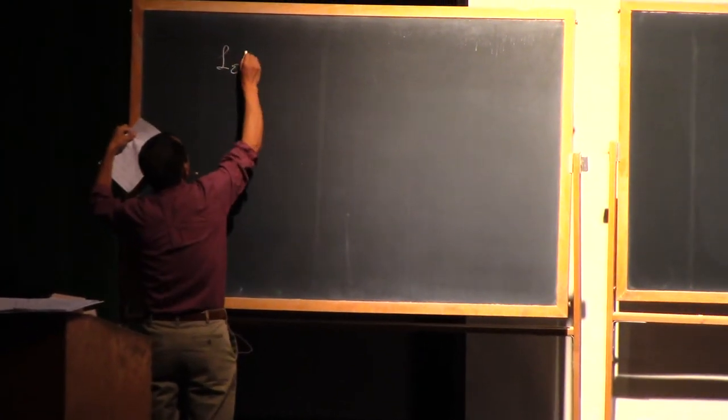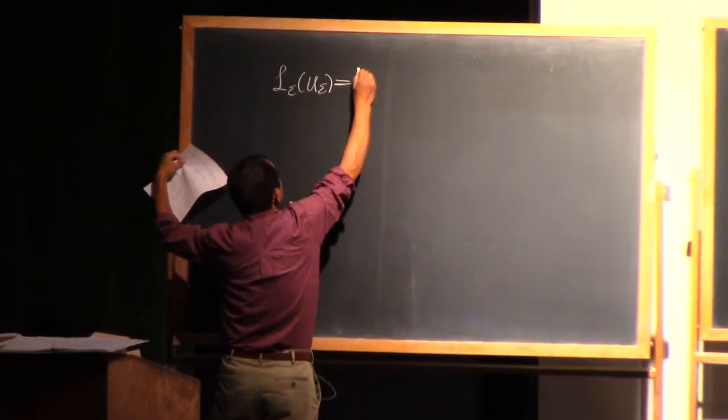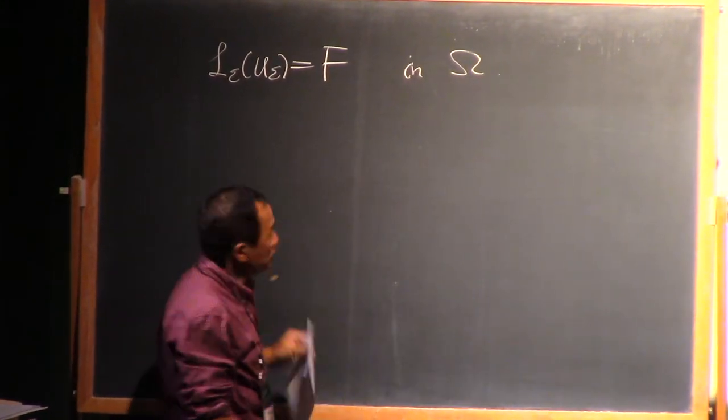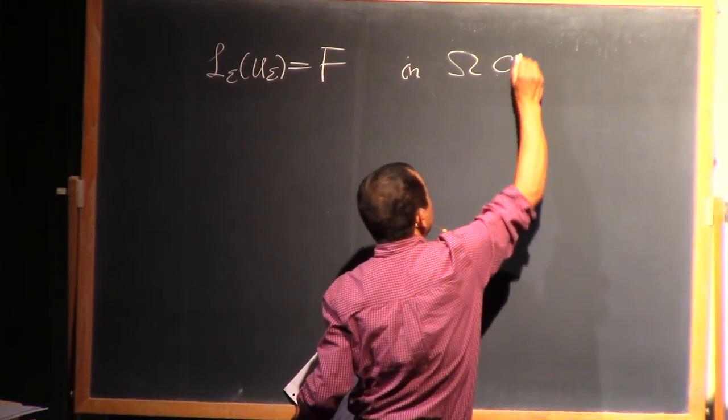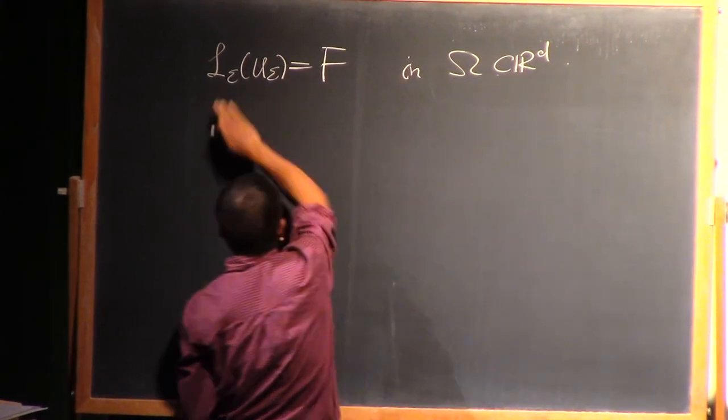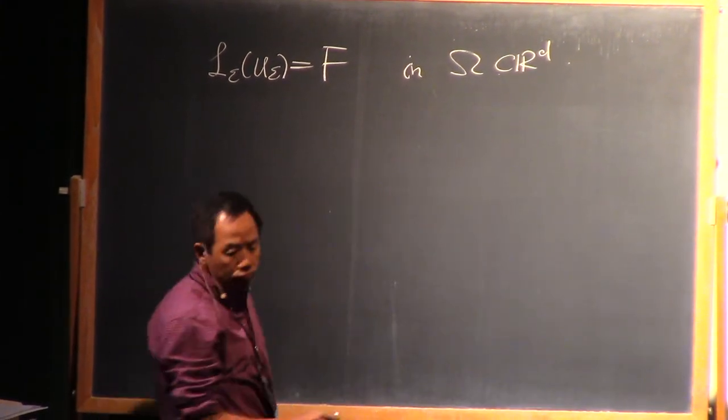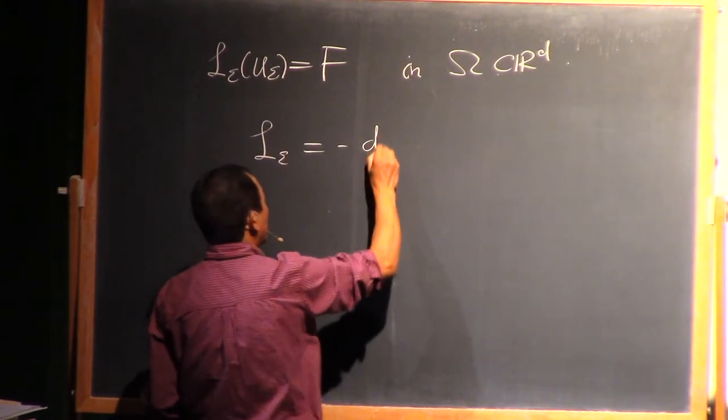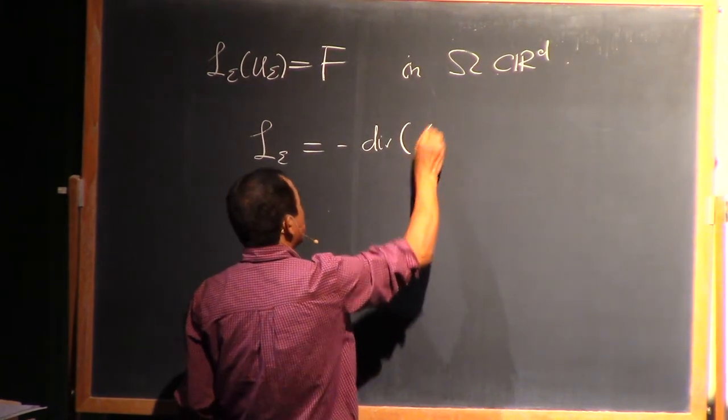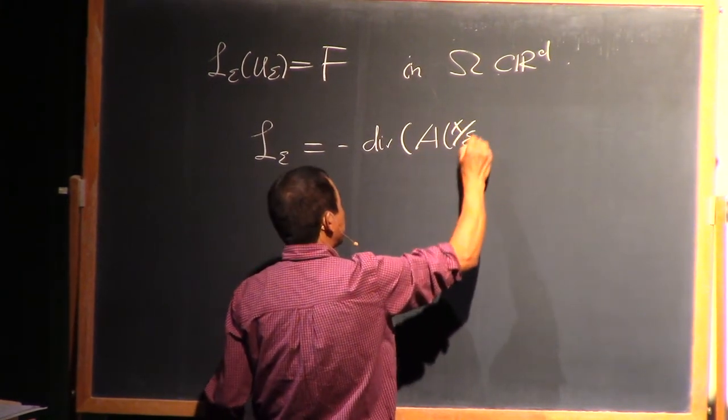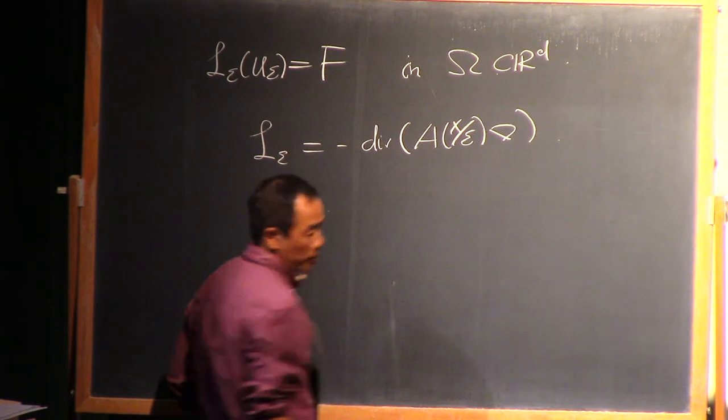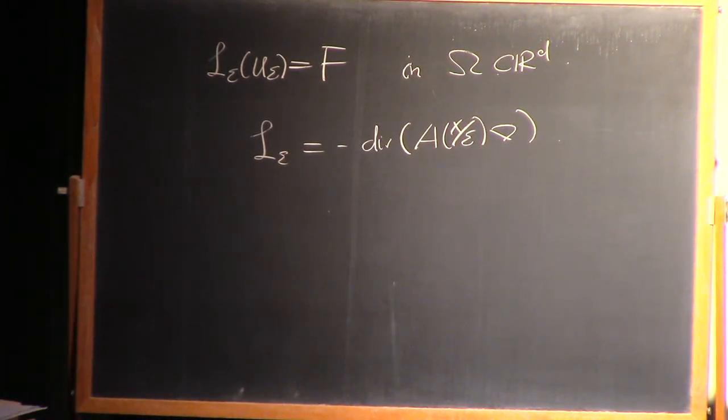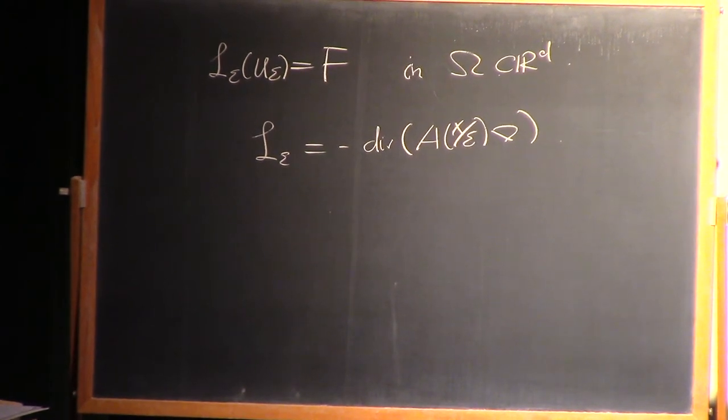So let's look at this equation in some bounded domain in R^d. The operator L_y is given by negative divergence of A(x/y) gradient. We're assuming A is elliptic and periodic, one periodic, for instance.